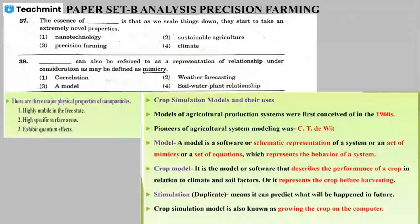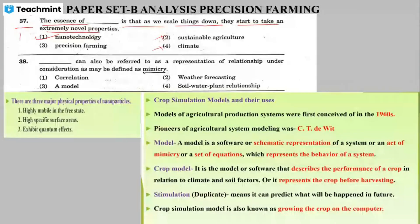The essence of nanotechnology is that when we scale things down, materials start to exhibit extremely novel properties — that is the correct answer. All options must be evaluated using the logic of nanotechnology. Scaling things down — for example, how a nano material behaves — is what nanotechnology is about.